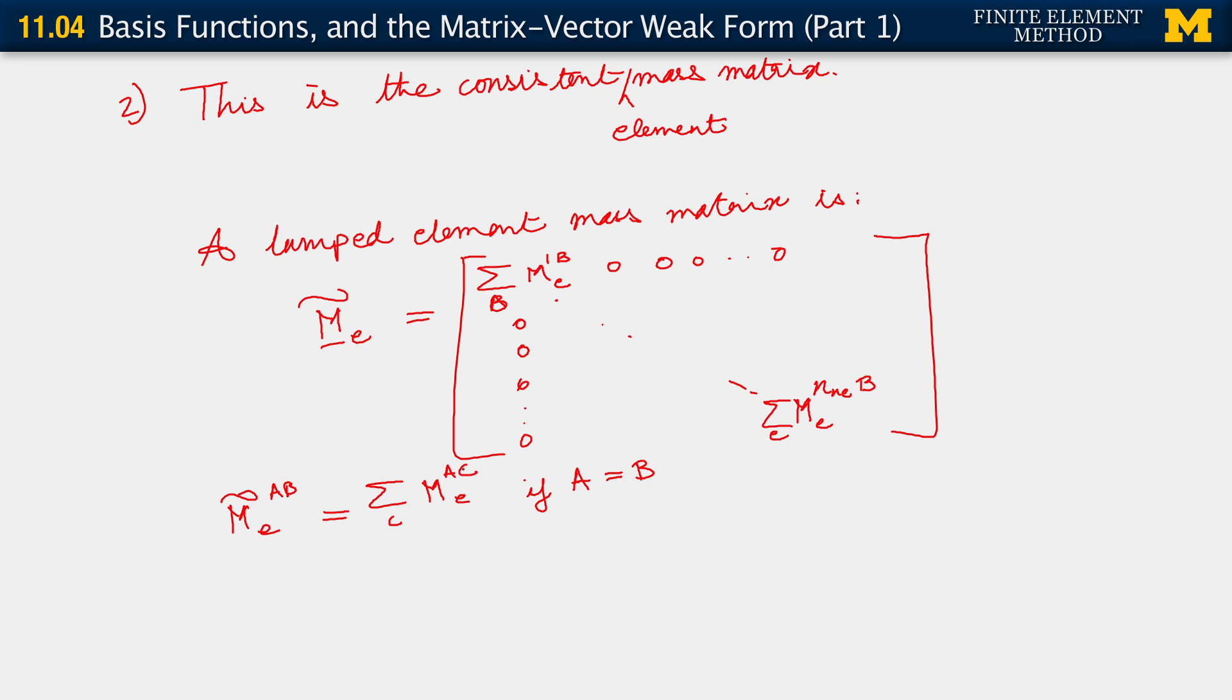Then you simply sum up over, you sum up the elements in that row. Okay? And put that sum on the diagonal. Okay? And it is equal to 0 otherwise. Right?